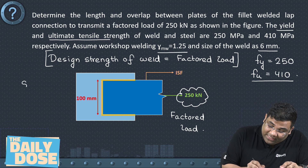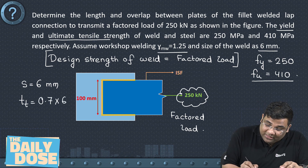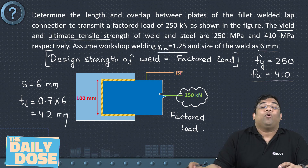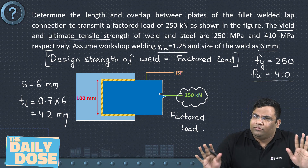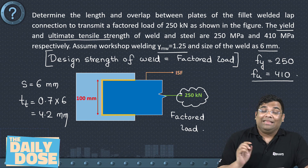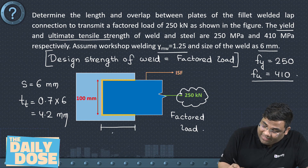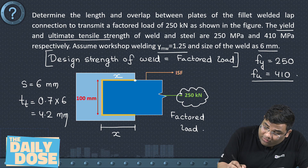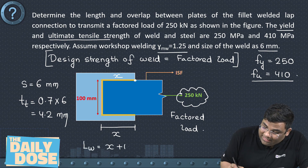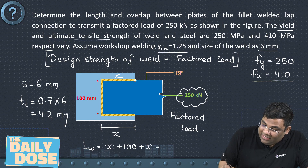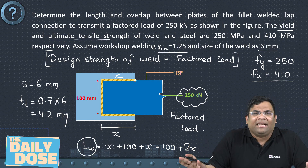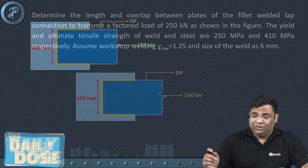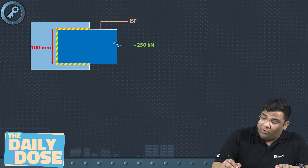The effective throat thickness is 0.7 × 6 = 4.2 mm, since no fusion angle is mentioned so we use k = 0.7. Now we need to find lw. If the overlap length is x on each side and the plate width is 100 mm, the total length of weld is 100 + 2x. Finding lw lets us find x.